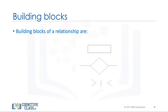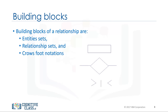The building blocks of a relationship are entities, relationship sets, and crow's foot notations. Entity sets are represented by a rectangle. Relationship sets are represented by a diamond, with lines connecting associated entities.